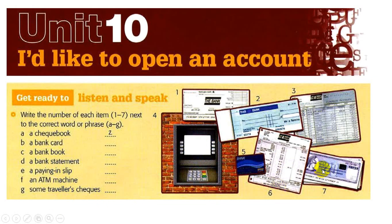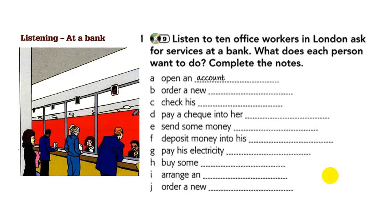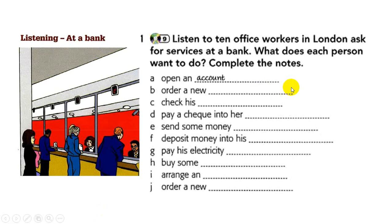Traveler's checks — number 7. 'Checks' means a bill of exchange; it is a purely British word. For Americans it could be 'check.' Now, listening at a bank: let's listen to Listening 9, which features 10 office workers in London asking for services at a bank. What does each person want to do? Complete the notes. Let's listen and complete the notes together, and if you'd like to participate, please send your completions in the chat.